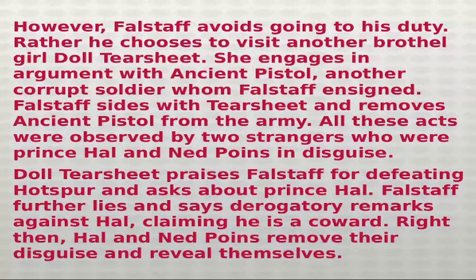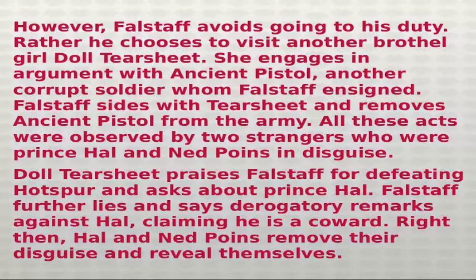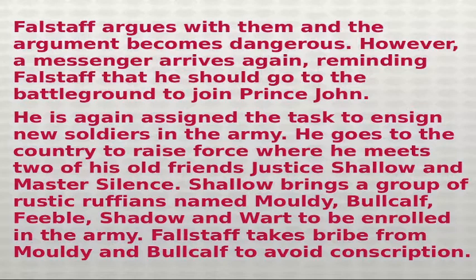Doll Tearsheet engages in an argument with Ancient Pistol, a corrupt soldier whom Falstaff had enlisted. Falstaff sides with Tearsheet and removes Ancient Pistol. All these acts are observed by two strangers who are actually Prince Hal and Ned Poins in disguise. Doll praises Falstaff for supposedly defeating Hotspur and asks about Prince Hal. Falstaff lies and makes derogatory remarks about Hal, claiming he is a coward. Right then, Hal and Ned Poins remove their disguise and reveal themselves. The argument becomes dangerous, but a messenger arrives again reminding Falstaff to join Prince John at the battleground. He is assigned the task of recruiting new soldiers and goes to the country to raise a force, where he meets two old friends, Justice Shallow and Master Silence.